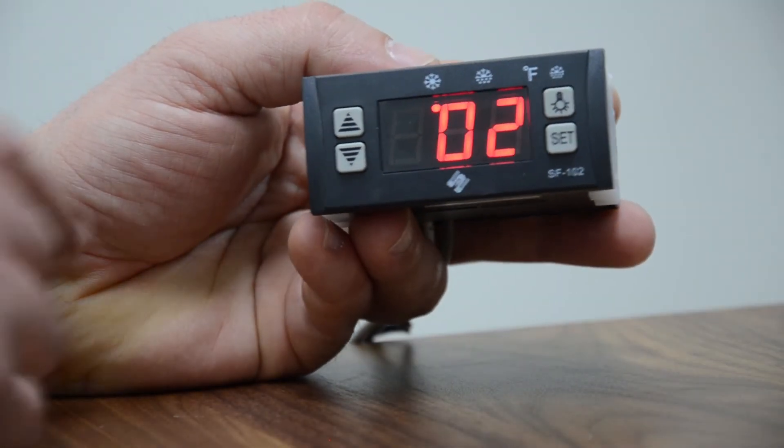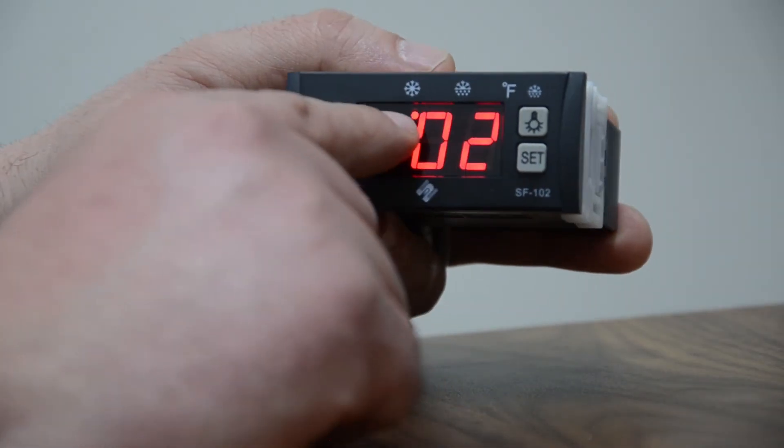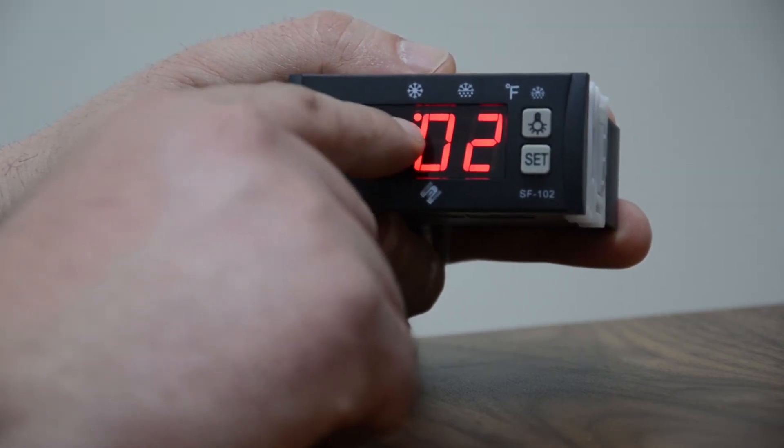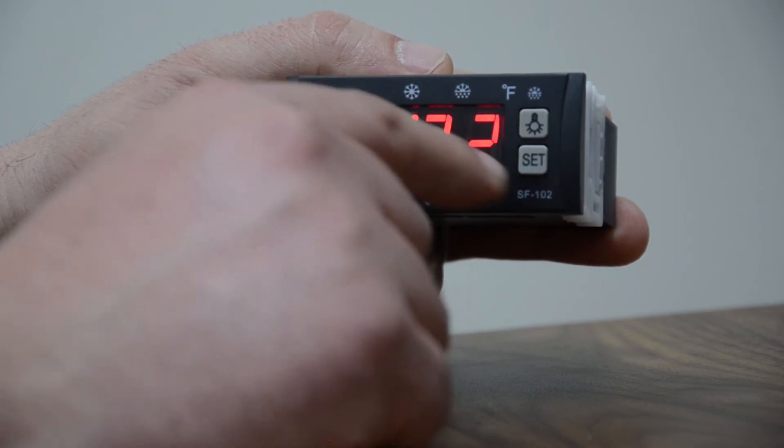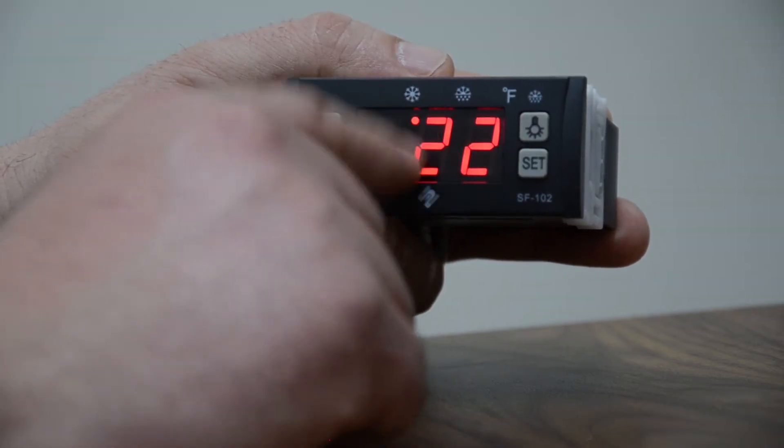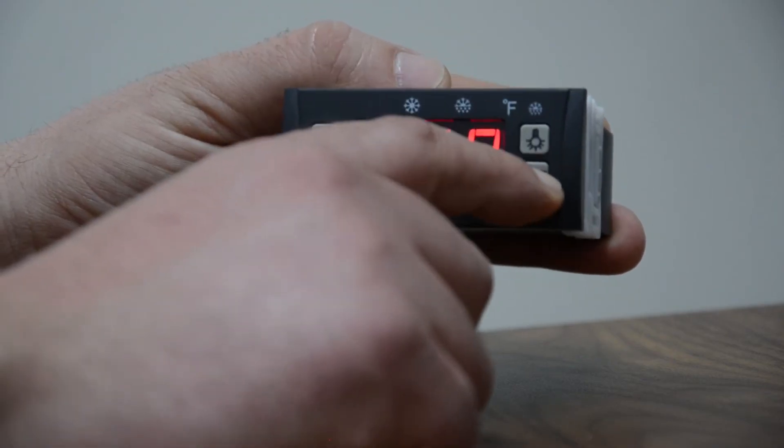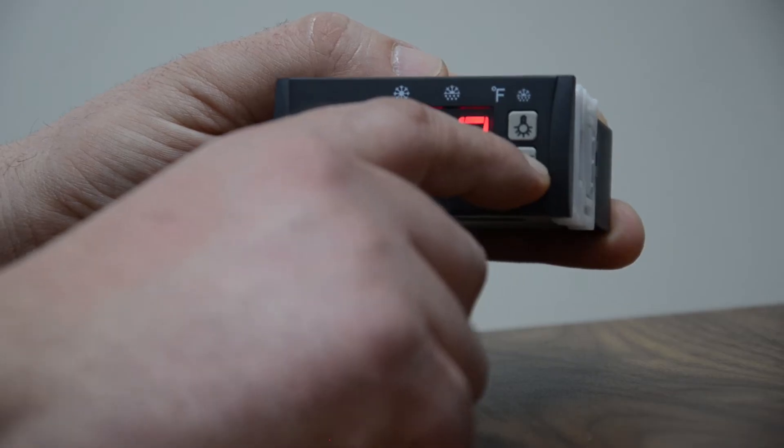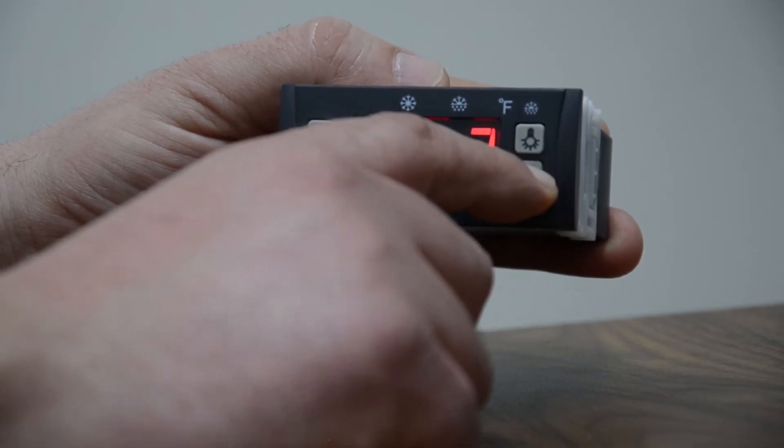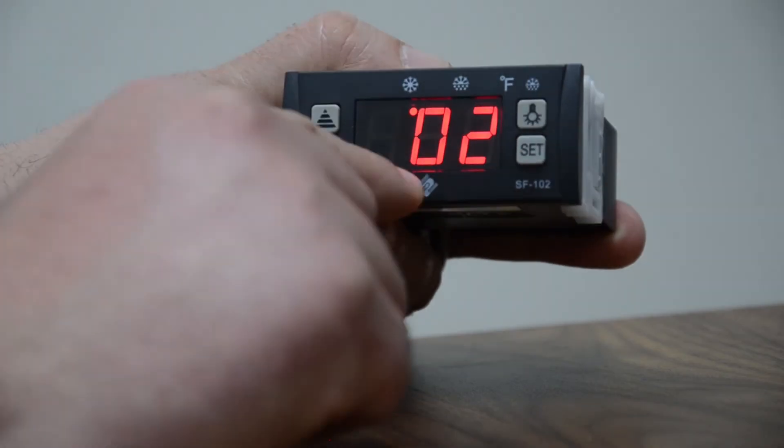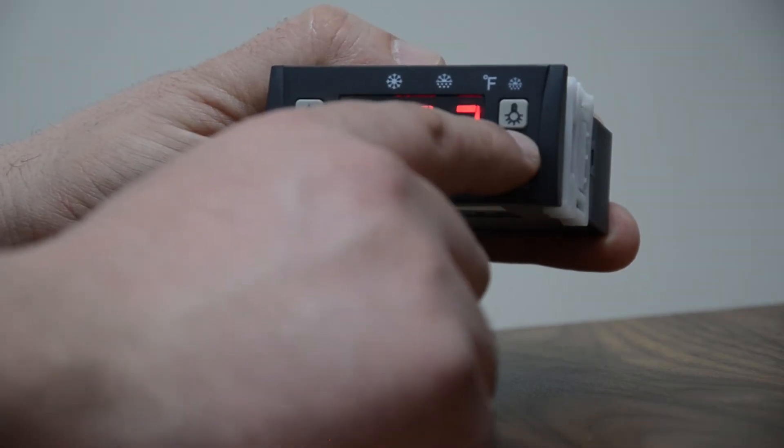E4 is the compressor start delay. For every two minutes, once it reaches temperature, you see that left dot blink, that means the cycle's on for two minutes, until it reaches that desired temperature. It cycles for two minutes and then starts up again. That is E4, the compressor start delay.